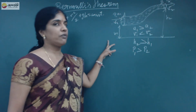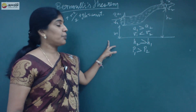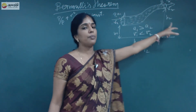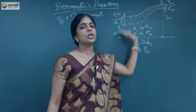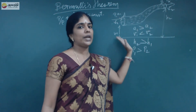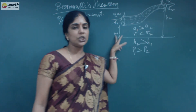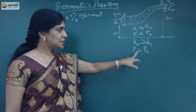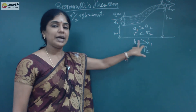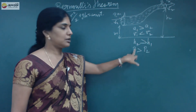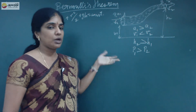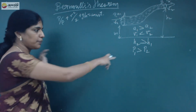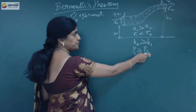H1 is the height at point A and H2 is the height at point B, where H2 is greater than H1. The potential energy is greater at point B since H2 is greater. Since the potential increases with height, P1 is greater than P2.